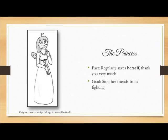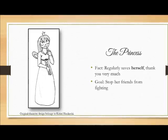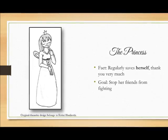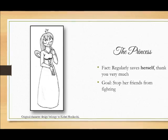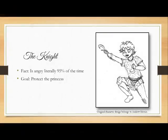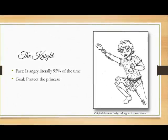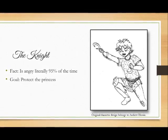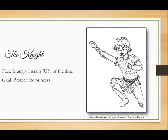This is our princess. Her fact: she regularly saves herself, thank you very much. Her goal is to keep her friends from fighting. And this is our knight. His fact is that he is angry literally 95% of the time, and his goal is to protect his princess. How do you think the princess is going to take this? Let's find out.